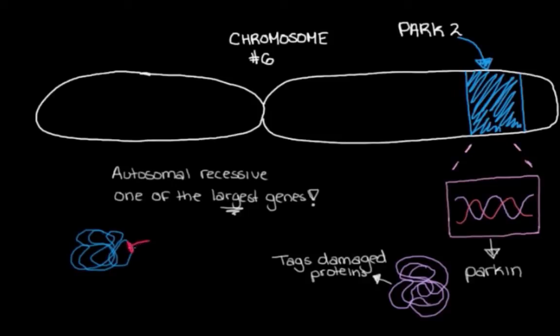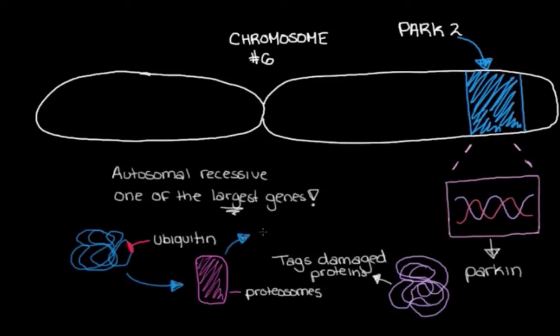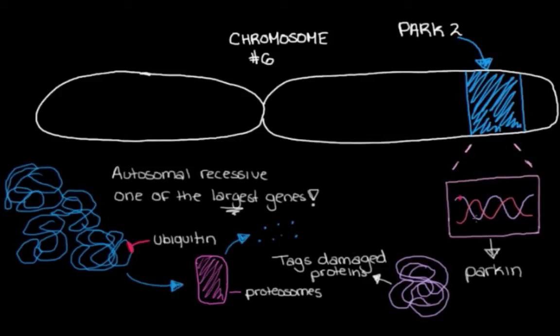And it tags them with this molecule called ubiquitin. So ubiquitin is like a little flag. It's a flag that alerts our cells to shuttle these proteins that we don't want anymore, and it alerts them to shuttle them to these structures in our cells called proteasomes. And this is where those proteins that we don't want get broken down and disposed of. So proteasomes are kind of like the waste disposal facility in our cells.